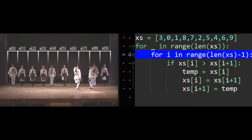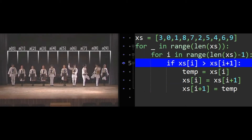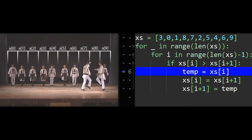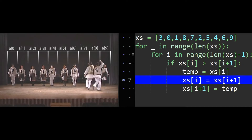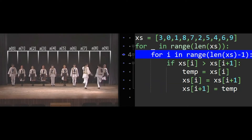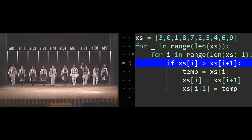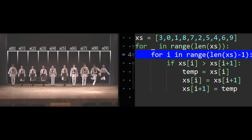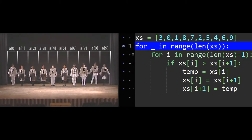The last three lines of code are just performing that swap. We use a temporary variable for the value at index i, then we assign the value at index i to be the value at i plus one, and then we assign the value at i plus one to be what we stored in that temporary variable. I'm going to let this run out a little bit longer and show the dancers simulating bubble sort.